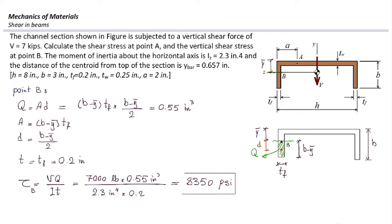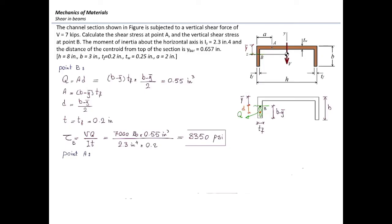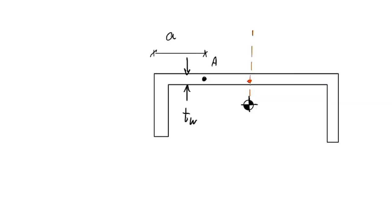Now let's talk about point A, which is a little more tricky. We use the same equation VQ over IT; V and I are the same, but Q and T are different. Point A is in the web, the horizontal element, so I cut in the vertical direction. We can take advantage of the symmetric section: stress at A equals stress at the sister point with the same distance on the other side.